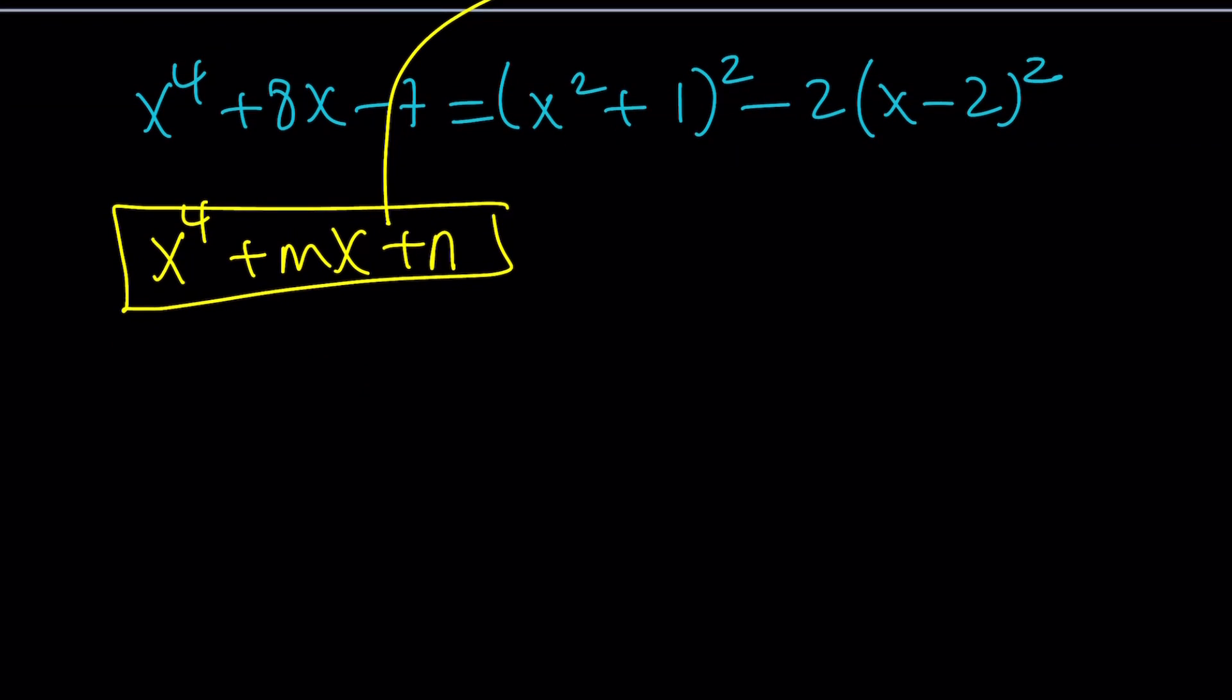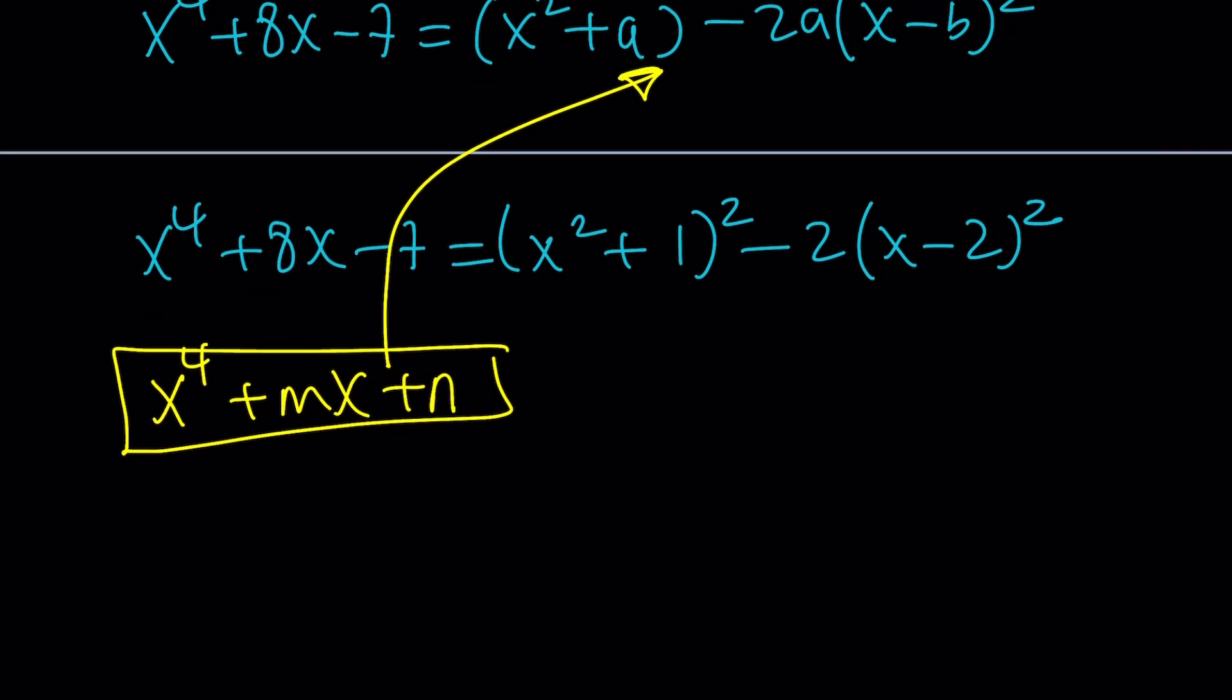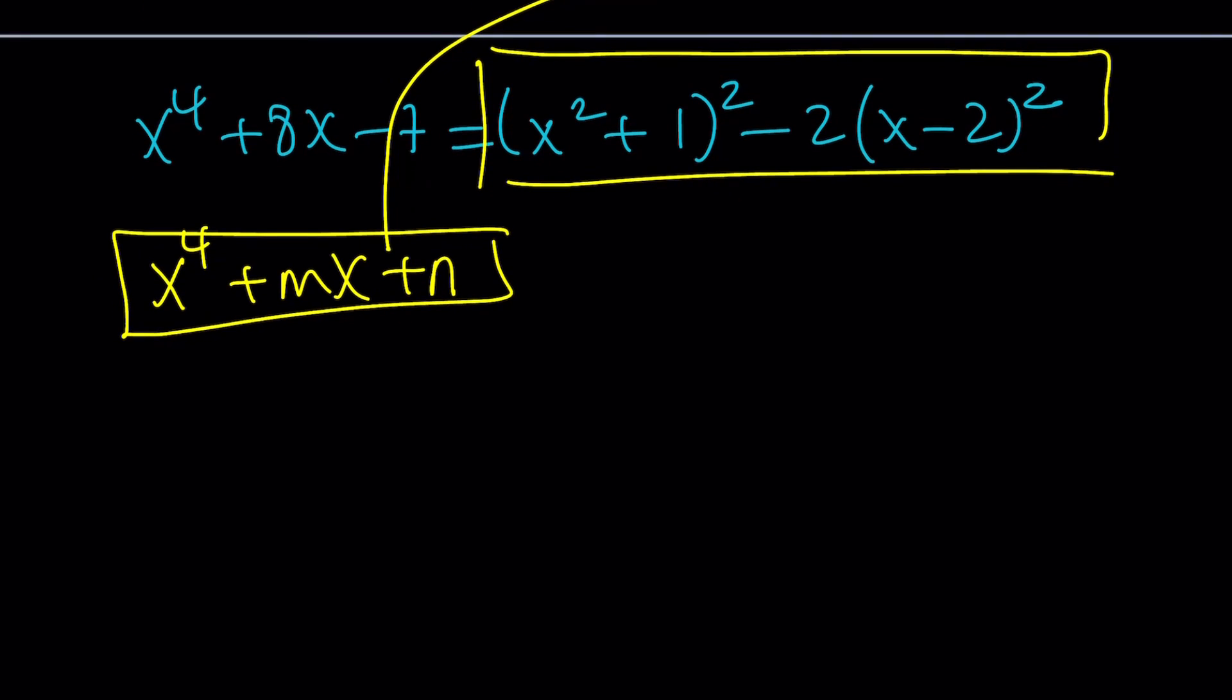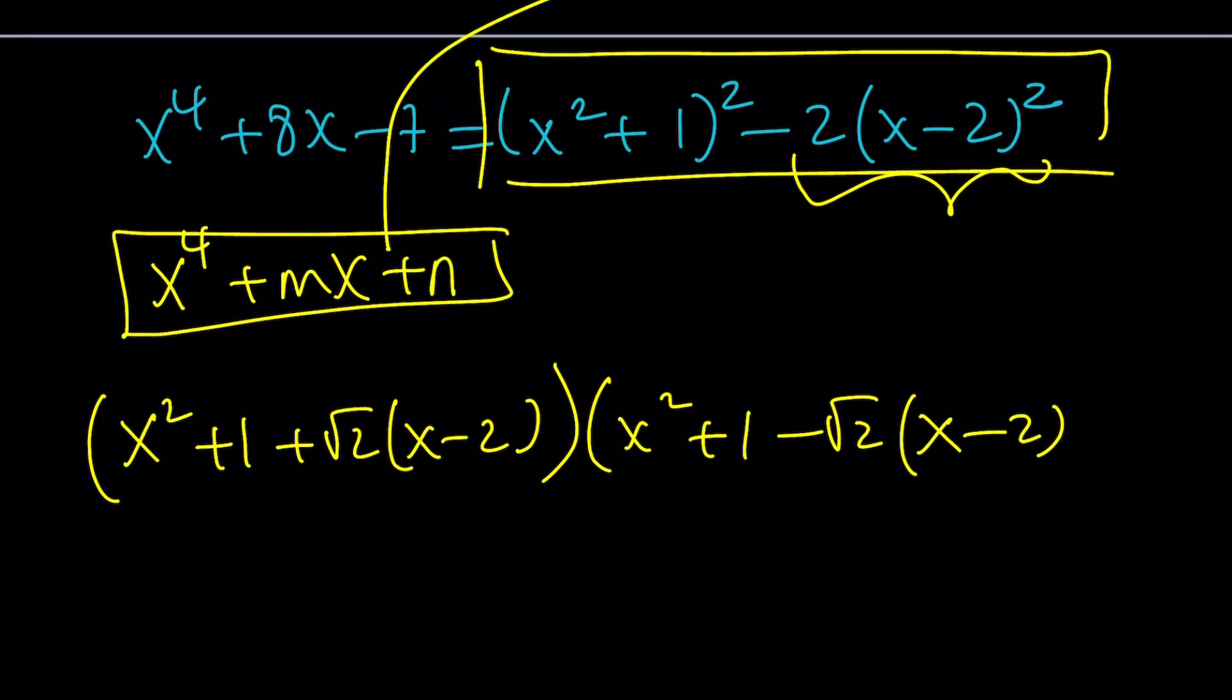Anyways, so now, let's factor this expression using difference of 2 squared. And then set it equal to 0. We can basically factor it as x squared plus 1. And now, when you square root this, you're going to get a root 2 here. So we can write it as plus root 2 times x minus 2, which is going to be one of the factors. And then the other one is going to be x squared plus 1, and this time we're just going to subtract the root 2 times that.